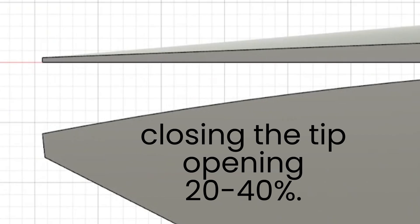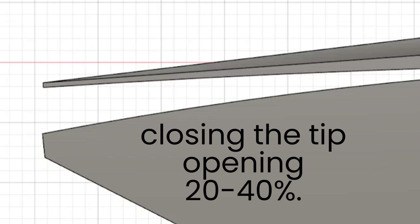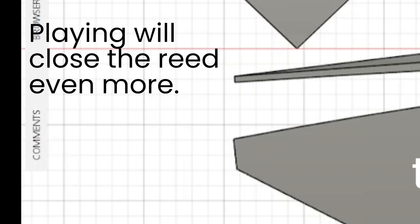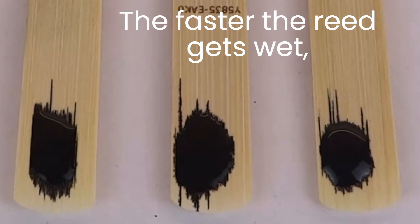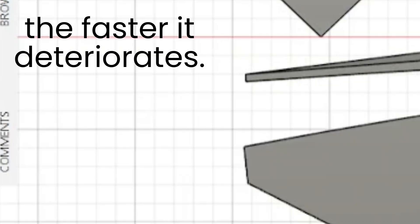See for yourself, closing the tip opening 20-40%. Playing will close the reed even more. The faster the reed gets wet, the faster it deteriorates.